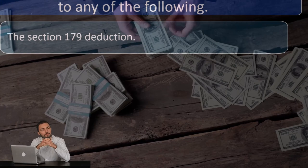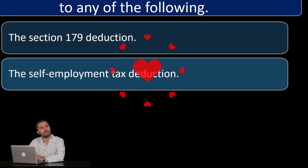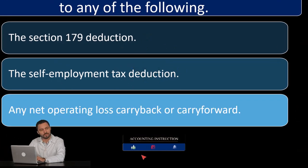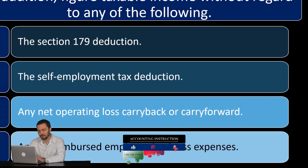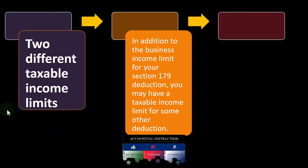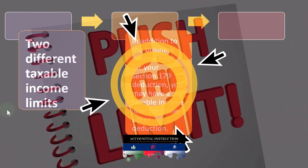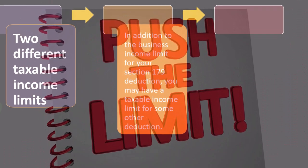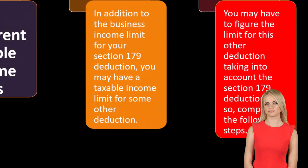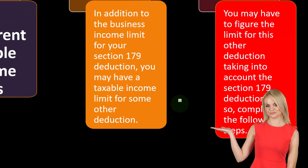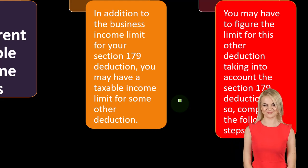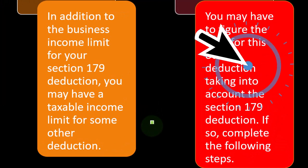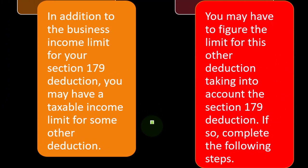When figuring taxable income for the Section 179 business income limit, do not include: the Section 179 deduction itself, the self-employment tax deduction, any net operating loss carryback or carryover, or any unreimbursed employee business expenses. In addition to the business income limit for the Section 179 deduction, you may have a taxable income limit for some other deduction, and you may need to figure that limit taking into account the Section 179 deduction.